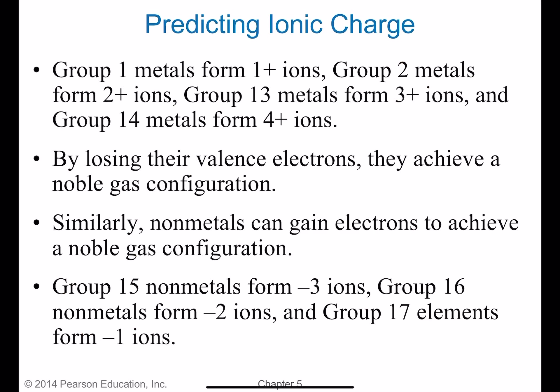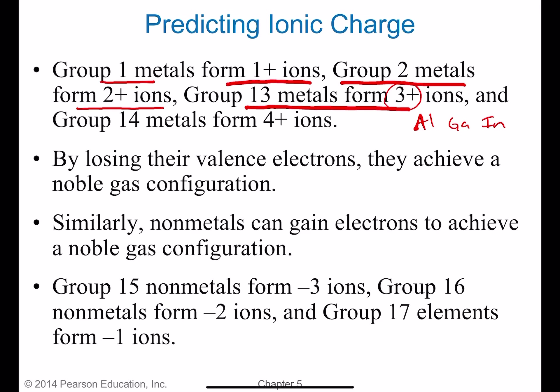Predicting ionic charge: Group one metals — the alkali metals — always form plus one ions because they have one valence electron. Group two metals — the alkaline earths — have two valence electrons, so they lose those two and form two plus ions. Group 13 metals, like aluminum, gallium, and indium, form three plus ions because they lose the two electrons in the S subshell and a single electron in the P subshell, losing three electrons total.